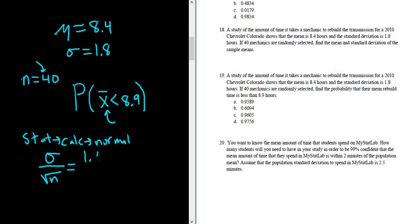So sigma is 1.8 and n is 40. So we get 1.8 over the square root of 40. If you put this in your calculator, you get approximately 0.2846. So this is going to be our new standard deviation.